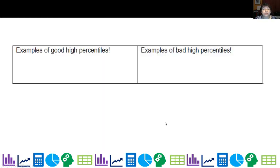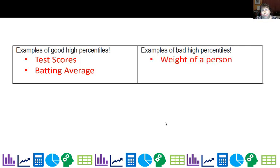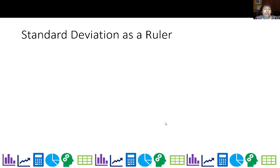Now there are examples of good high percentiles besides my hiking. Test scores, always good. Batting average, that would be great. Bad high percentiles, weight of a person. Sadly, I know about that. Number of speeding tickets. Luckily, I don't have that problem. So actually not just luck, I just don't speed.